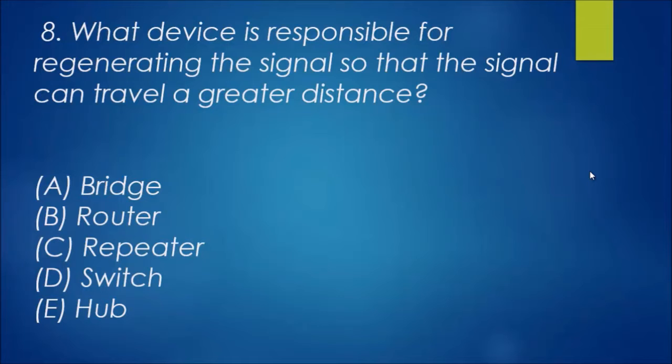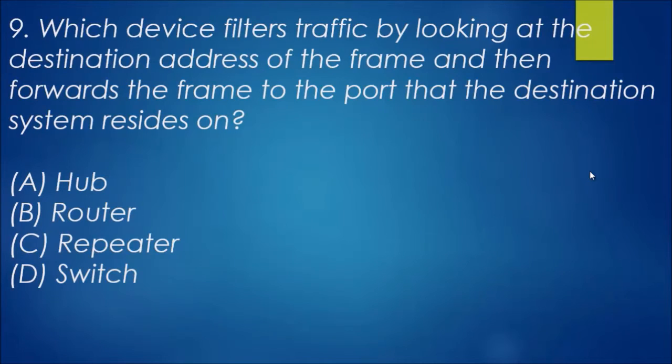Now with number nine: which device filters traffic by looking at the destination address of the frame and then forwards the frame to the port that the destination system resides on? It certainly won't be a hub - a hub is a very dumb switch.